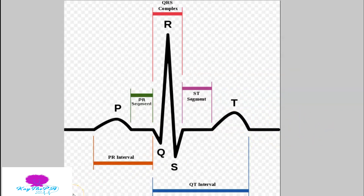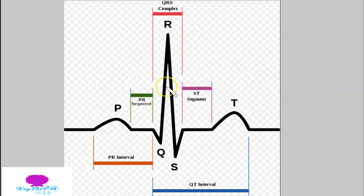Now that we know what the different waves and segments mean, we're going to talk about different intervals. There are three: the PR interval, the QRS, and the QT interval. When you're a monitor tech, you'll be measuring these intervals to get values that help determine what rhythm you're looking at. The first one is our PR interval.